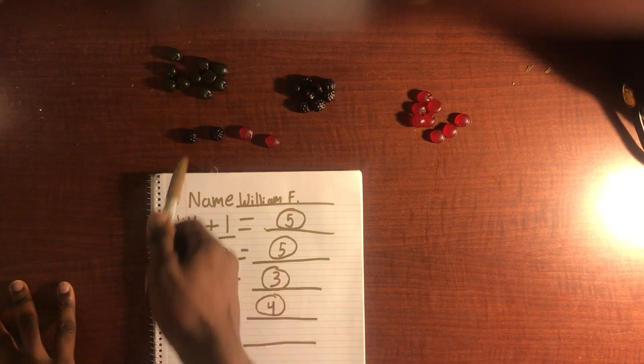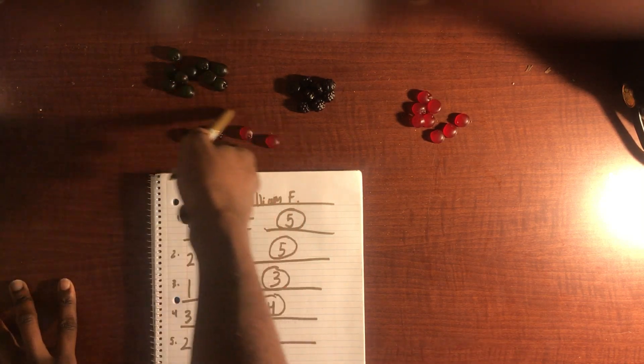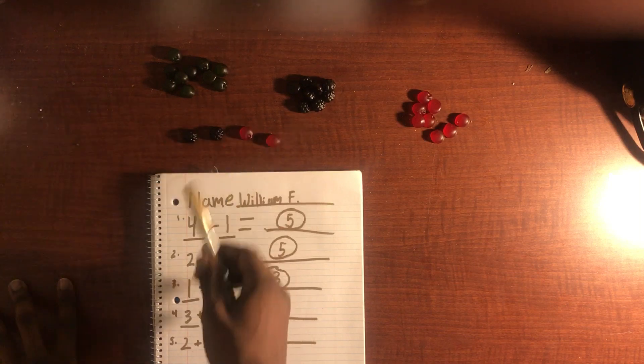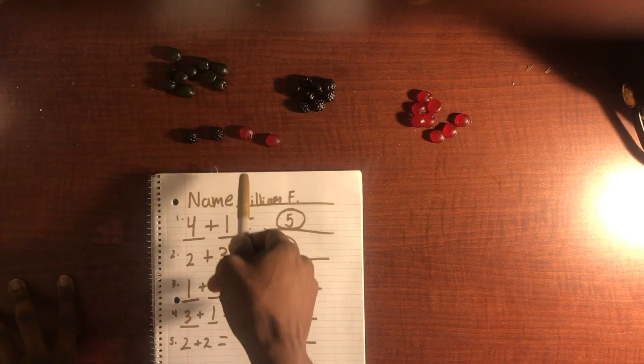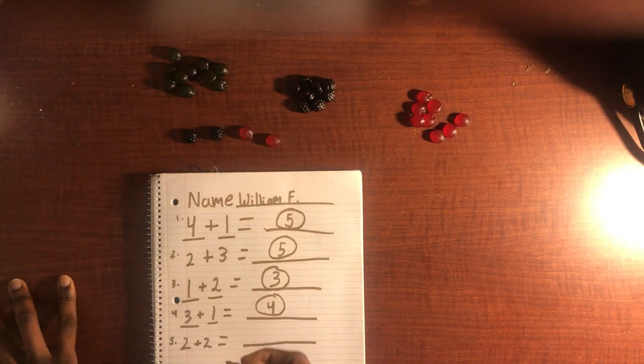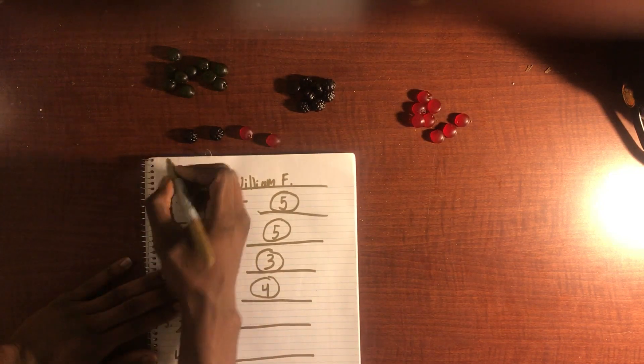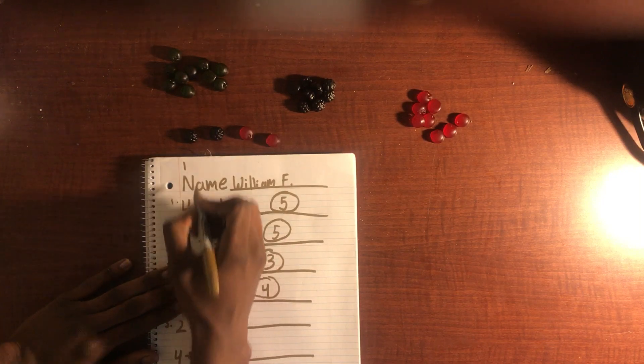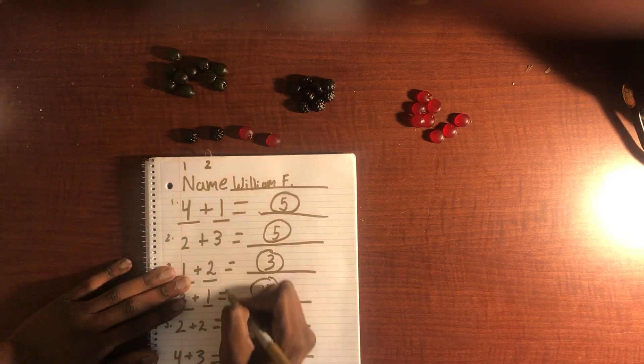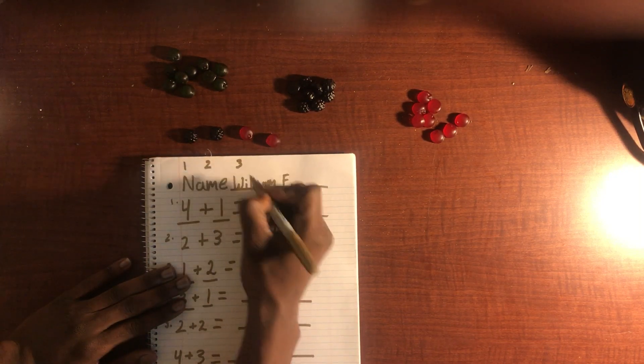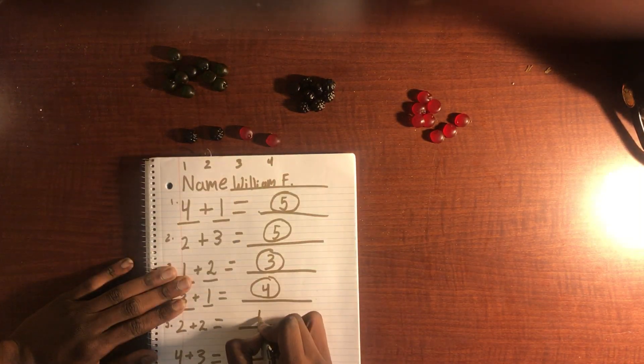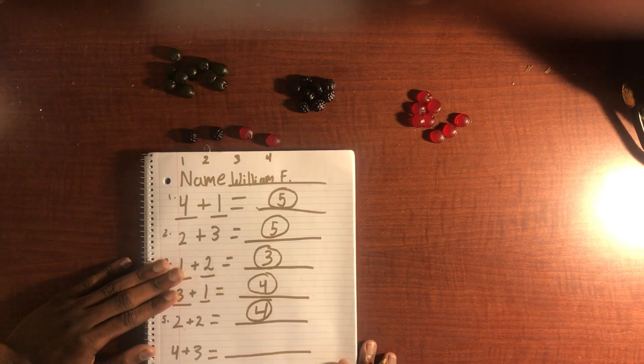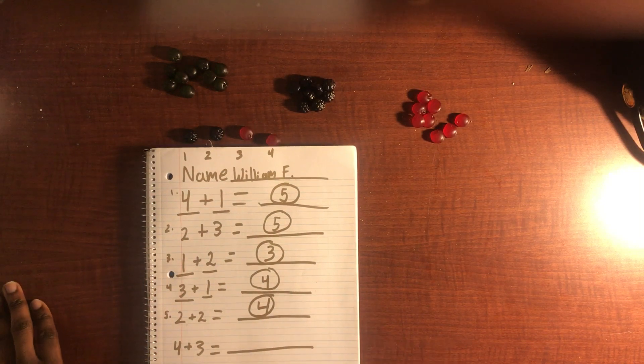So in total, how many gummies do we have now? Just in this total right here, we're going to have one, two, three, four black gummies. Let's count one more time: one, two, three, and then four. So two plus two would then equal four.